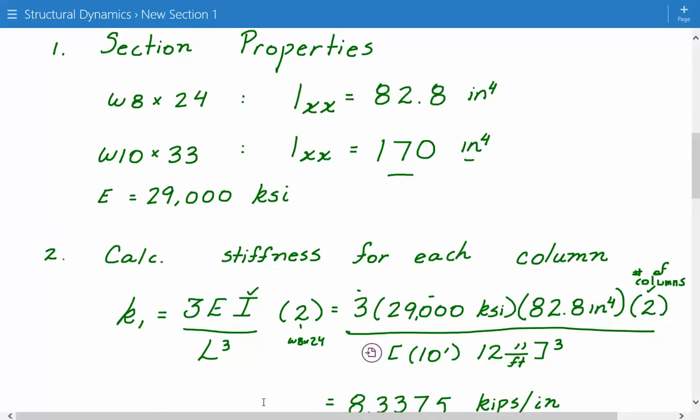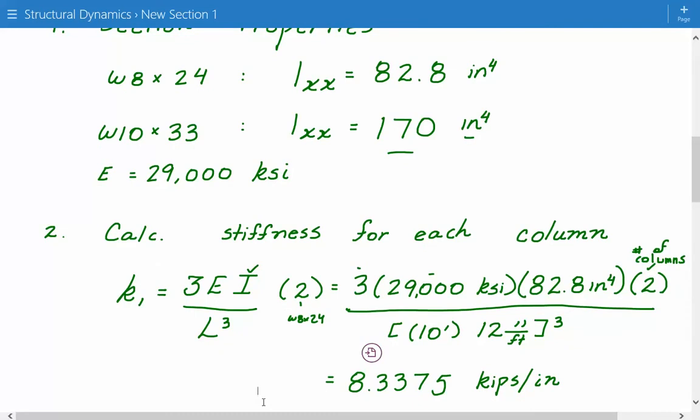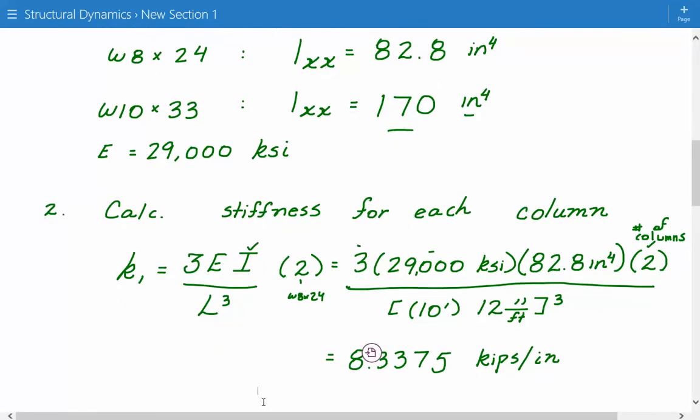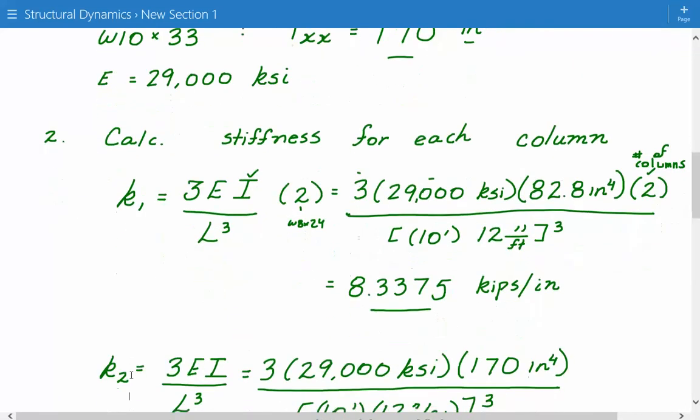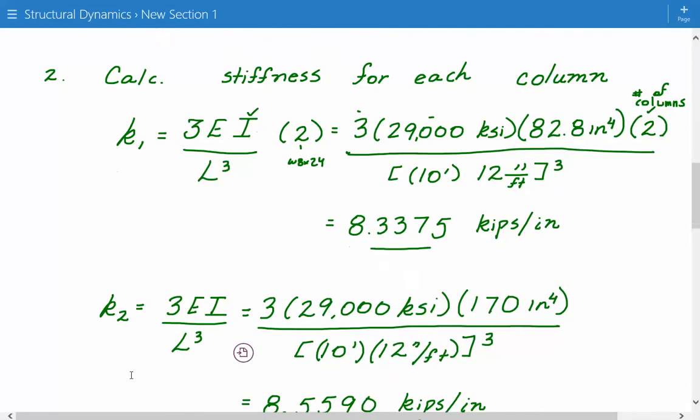So this gives us the stiffness for the W8 by 24 columns, two of them, is 8.3375 kips per inch. So we've calculated the stiffness for two columns. And we still have to calculate the stiffness for the W10 by 33. And again, since it's a pin support at the end, it's the same. The expression is the same since it's pin supported. 3 times EI divided by L cubed.